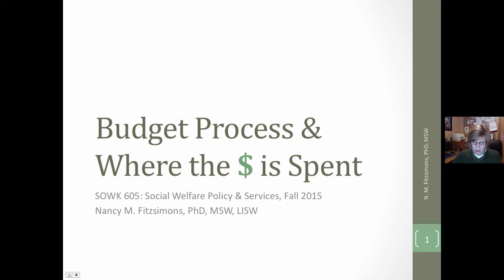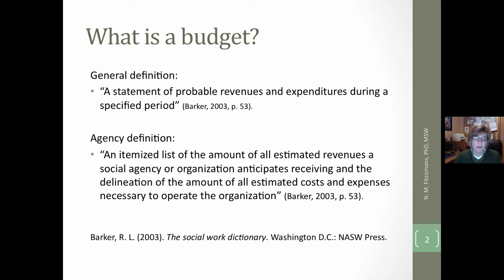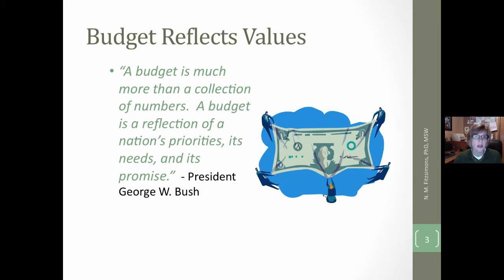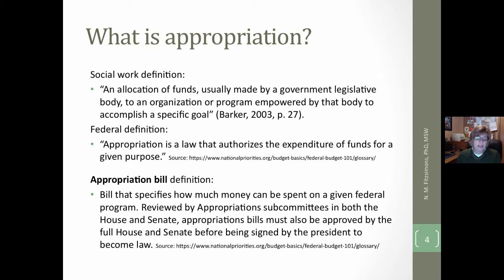This is an updated budget process and where the money is spent — the PowerPoint slides have been updated as well. We're going to start with what is a budget. A budget is essentially a statement of probable revenues and expenditures during a specified period of time. You've already looked at the revenue side, so note that the revenue side is part of the creation of a budget. A budget reflects value — it is the reflection of a nation's, state's, county's, city's, family's, or individual's priorities, needs, and promises.